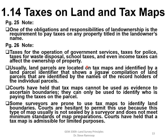Section 1.14: Taxes on land and tax maps. Taxes are one of the many ways that a local jurisdiction collects money to provide services for the local community. One of the obligations of land ownership is the requirement to pay taxes on any property titled in the landowner's name. Because a property has a fixed location that will never change, the landowner has certain responsibilities to keep it up to date and pay all taxes.